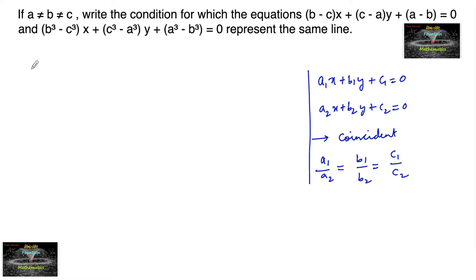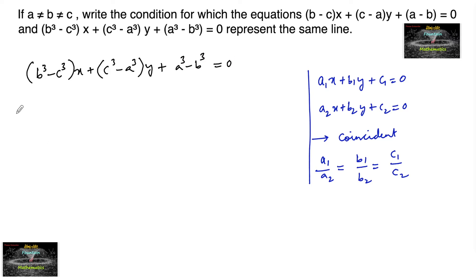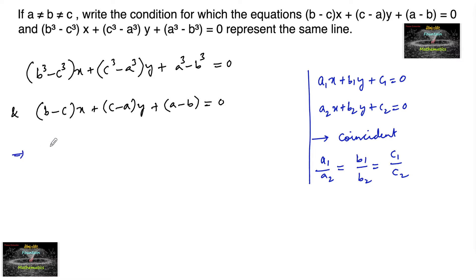The line equations are (b³ minus c³)x + (c³ minus a³)y + (a³ minus b³) = 0 and (b minus c)x + (c minus a)y + (a minus b) = 0. By using the condition, we can write: (b³ minus c³)/(b minus c) = (c³ minus a³)/(c minus a) = (a³ minus b³)/(a minus b).